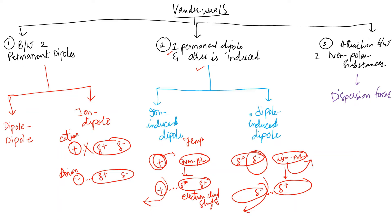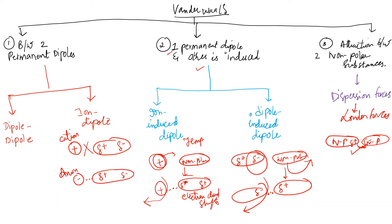The third case is between two non-polar substances, also called dispersion forces or London forces. Here, the interaction between two non-polar substances takes place, and this is always attractive because the non-polar substances placed side by side will have a partially positive and negative charge distribution. When the electron cloud gets distorted, it produces more instantaneous or momentary dipoles, which induce dipoles in the neighboring molecule.